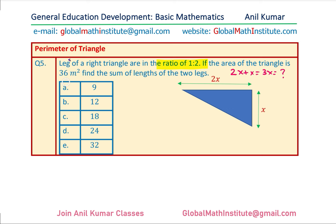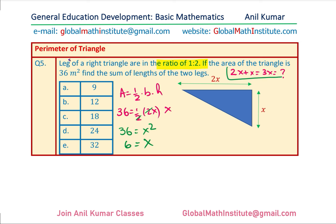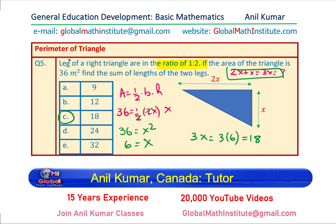We are given area = 36. Area equals half base times height, so 36 = ½ × 2X × X. Cancel the 2s and we get 36 = X², so X = 6. The sum of the two legs is 3X = 3 × 6 = 18. Option C is the right answer. Read the questions properly to make sure you know exactly what is being asked.